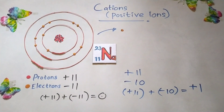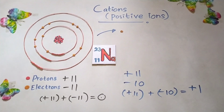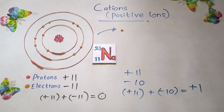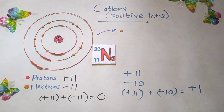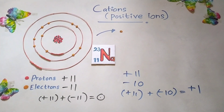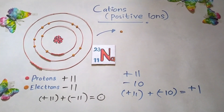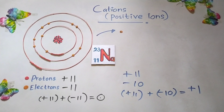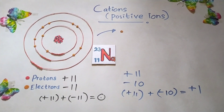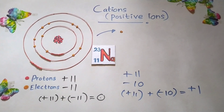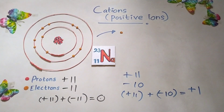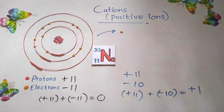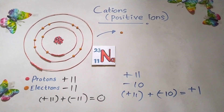Now see — the sodium atom has been converted to a positive ion. We call that not an atom but a cation, or a positive ion. So neutral atoms, when they remove electrons from them, form cations.